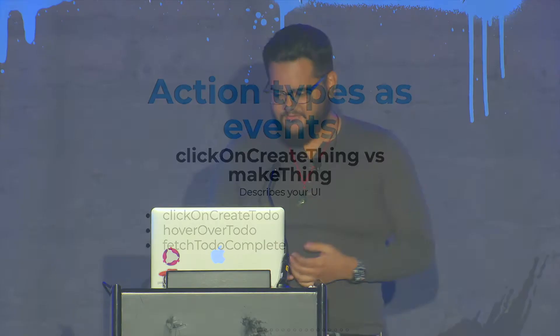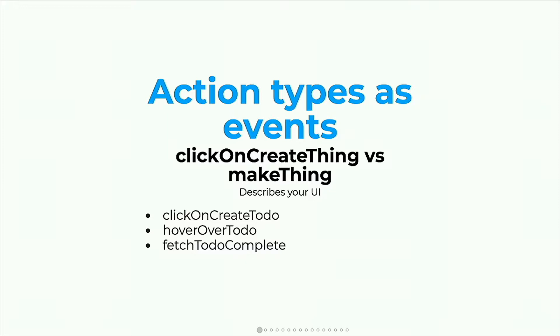Here are some examples. If we use ToDoMVC, you can think of it as: click on create to-do, hover over to-do, fetch to-do complete. So click on create to-do would be a link that says create to-do for the user — the user clicks on it. Hover over to-do is the user hovering over a to-do, which would trigger some sort of CSS state change.